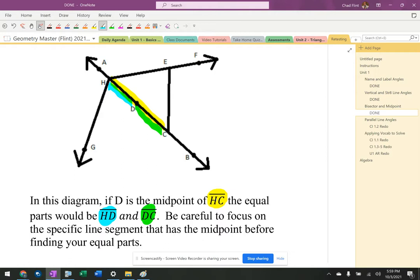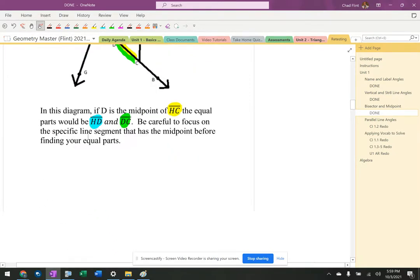And again, remember, really pay attention to what the segment with the midpoint is, because if it wasn't HC, then those would not be the equal parts. So it's very, very important, especially with more complicated diagrams to really zone in on that so that we're making sure that we get the proper information.